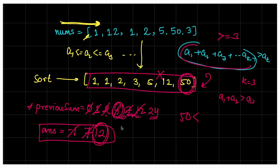So to summarize: we sort the array to arrange all sides in sorted order, then check whether the sum of all previous smaller sides is greater than the current side. If yes, we update our answer. If no polygon is ever possible, we return -1.